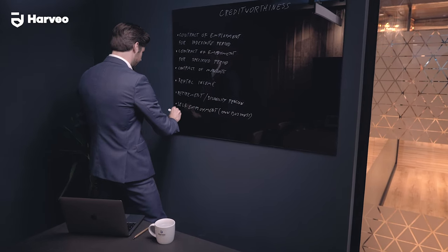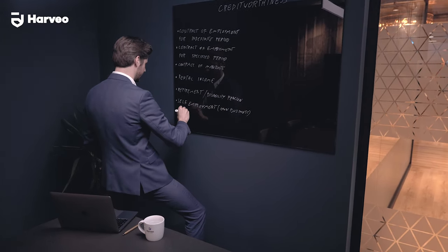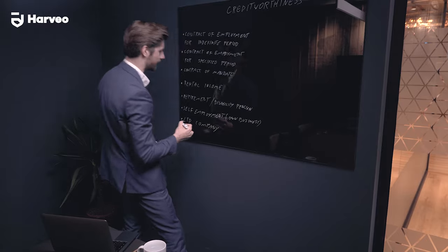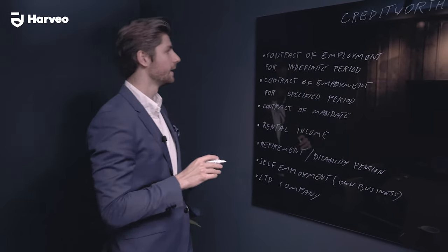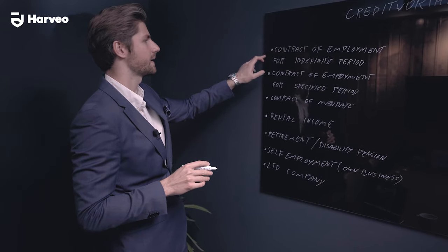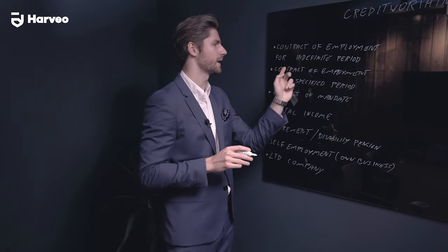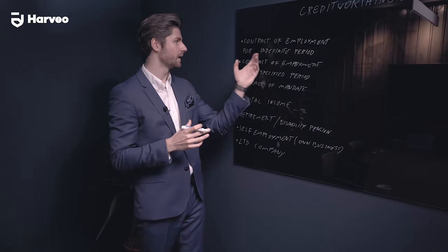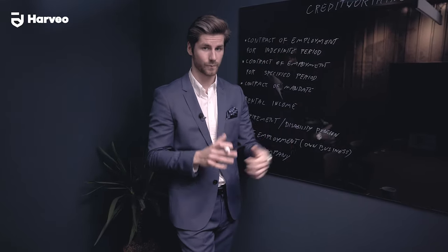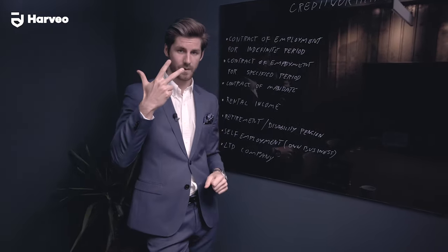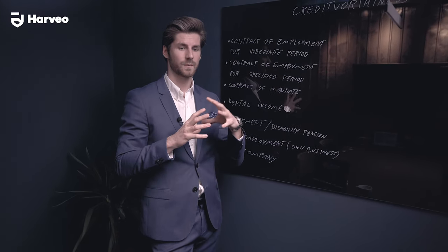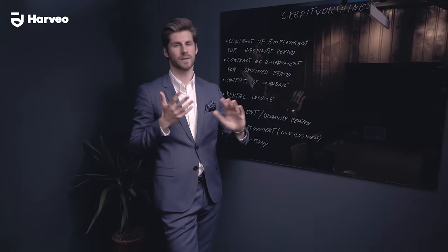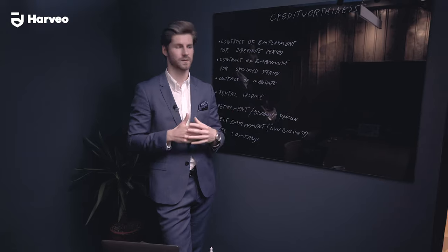And then there can be a limited company, an Ltd company. I can extend more on that later. Shortly about all of them: the most common one is a contract of employment for an indefinite period. Let's say you're employed in a big corporation with an indefinite contract — then we're going to look backwards only three months and take an arithmetical average for the last three months. There are some exceptions where you can use 12 months if it's better because you had bonuses or additions.